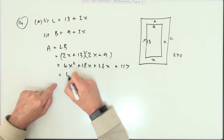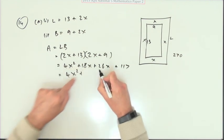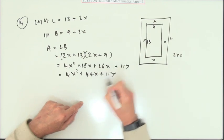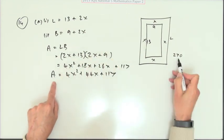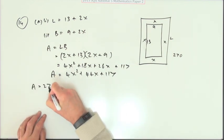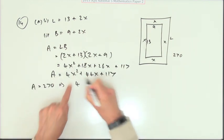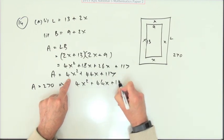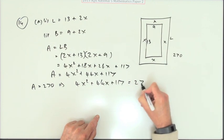Tidy that up. 4X squared plus, and that's going to be 30, 44. 44X plus 117. But it said the area was 270. So if the area is equal to 270, that means that this thing, 4X squared plus 44X plus 117, is equal to 270.